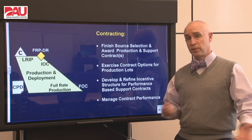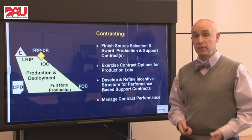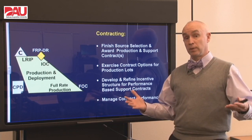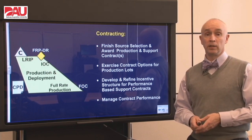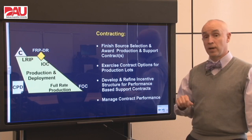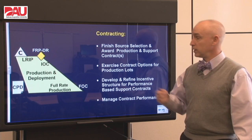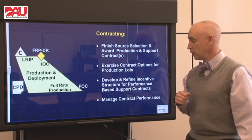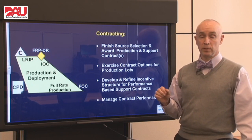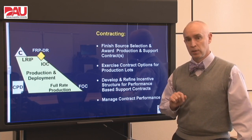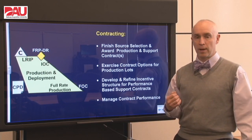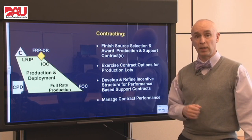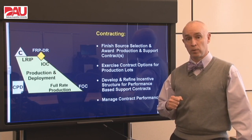Moving to contracting, there's a lot of effort going on. There might be several contracts for support or just one — it depends on your contracting strategy. There's going to be a lot of effort that your contracts management folks will have to take care of. We're going to be exercising contract options for lots of production once we get the initial production contract signed. We'll also develop and refine incentives based on feedback from the field — figuring out what's smart to incentivize contractors to do, whether better reliability, turnaround time, or quicker repair time. We also want to manage contract performance and drive contractor behavior the way we want.